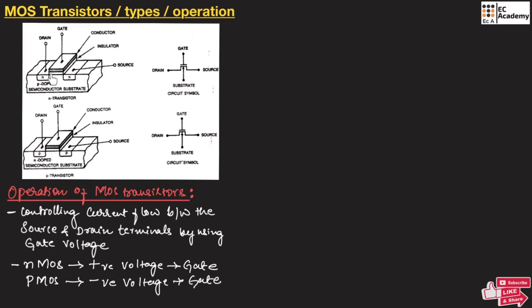In NMOS, a positive voltage is applied across the gate. This positive voltage attracts free electrons in the P-type substrate towards the gate, and a channel is formed between drain and source so that current can easily flow between them.